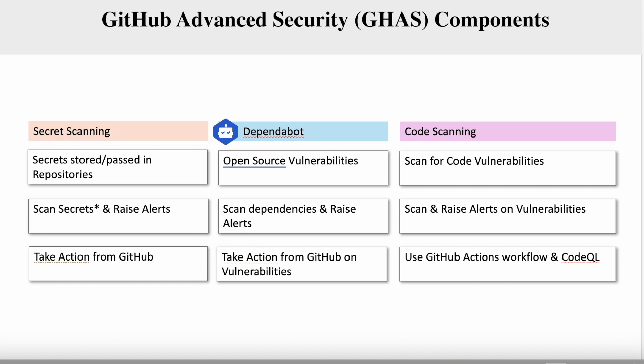There are three components to GHAS, GitHub Advanced Security: Secret Scanning, Dependabot, and Code Scanning.